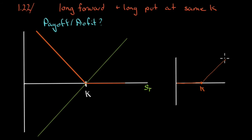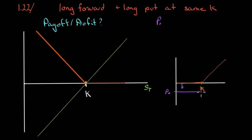After K, if we add the two lines together we get a straight line upward. That is our payoff. However, while the forward was free to enter into, the put had a price P₀. So we paid P₀, and our profit drops across the whole graph by P₀ — we just shift the line straight downward by the price of P₀. Our payoff and profit are different; try not to get confused between them.